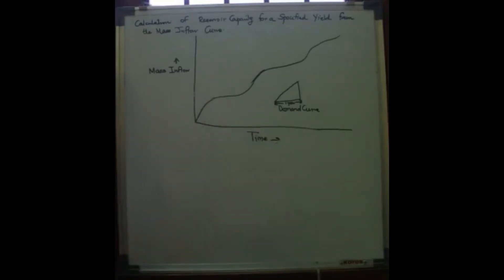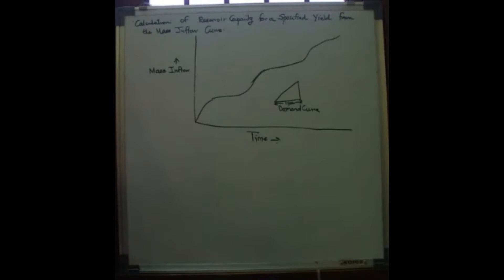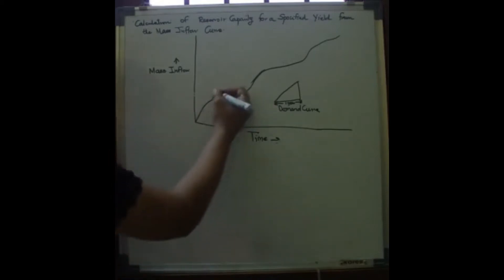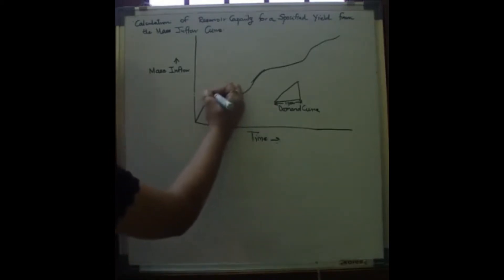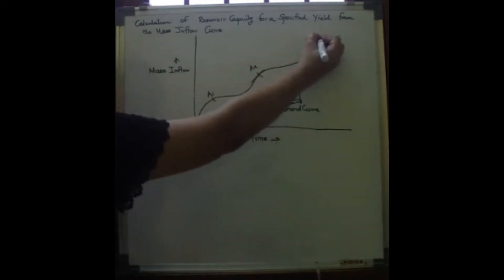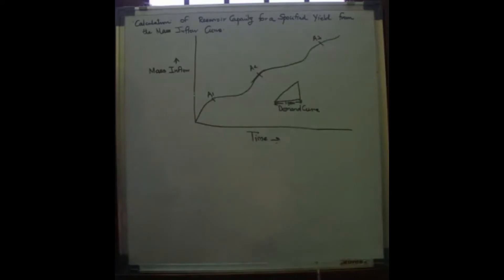From the apexes of the mass inflow curve, draw tangents parallel to the demand curve. The apex points are labeled A1, A2, A3. For the next step, we draw tangents which originate parallel to the demand curve.